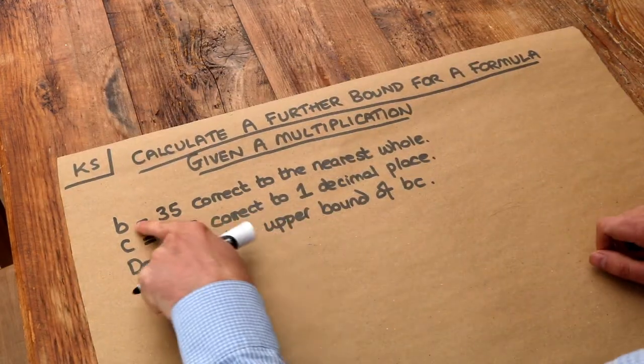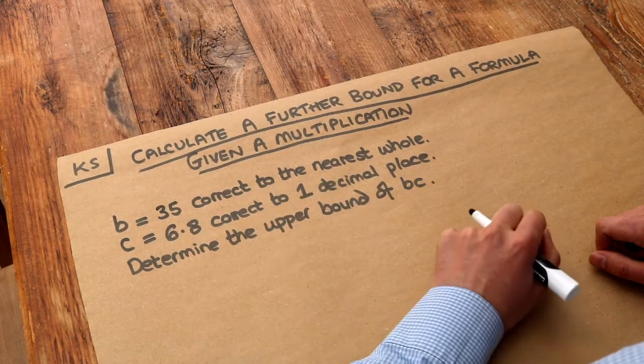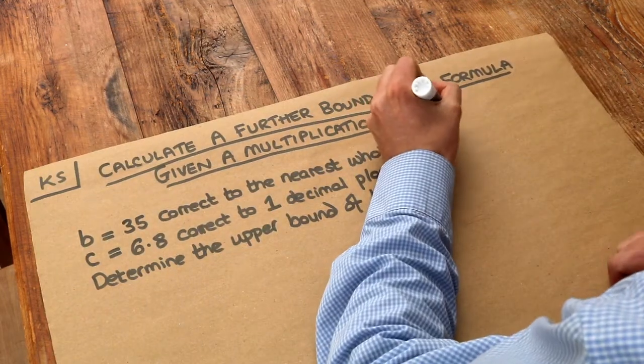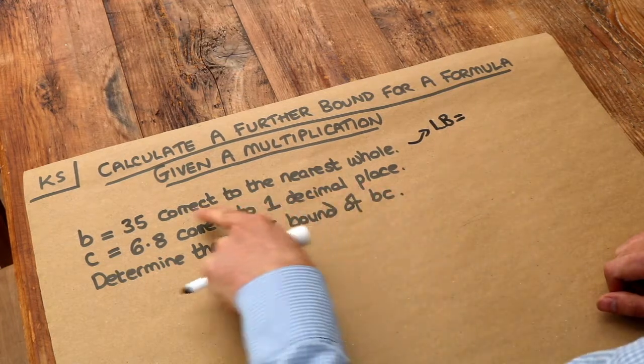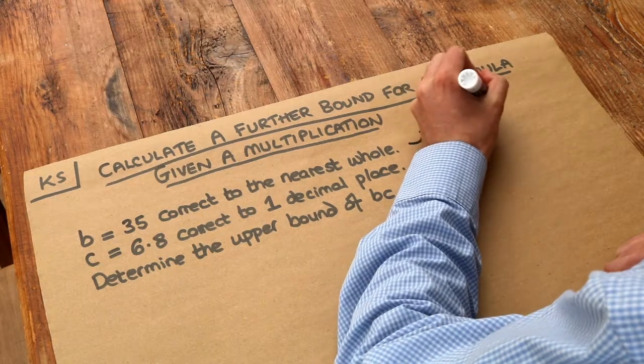So for example, for B, if we're told that B was 35 correct to the nearest whole, then you would hopefully know how to find the lower bound, which means the smallest this measurement could have been before it was rounded to the nearest whole. Well, it's 34.5, isn't it?